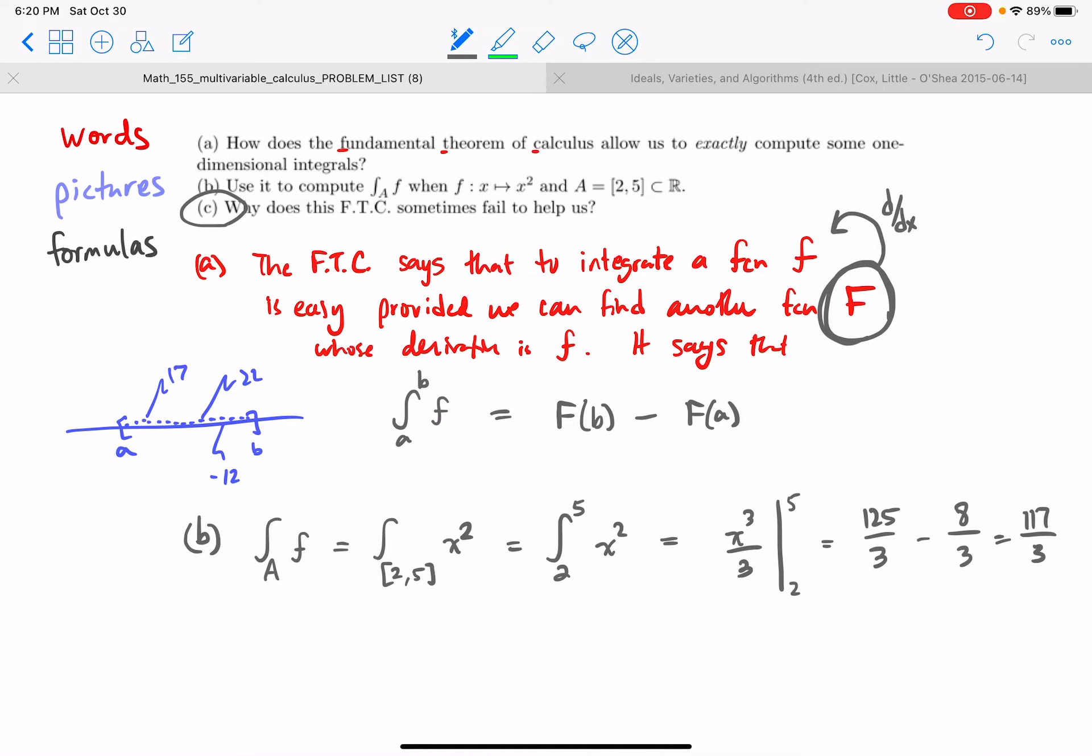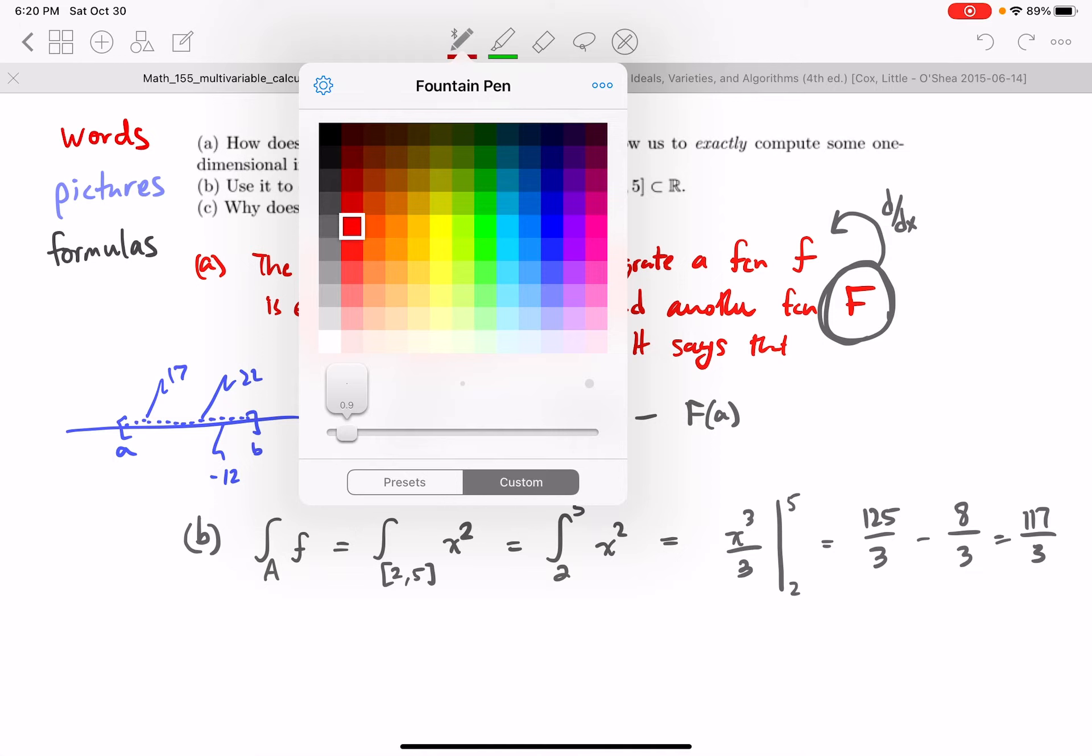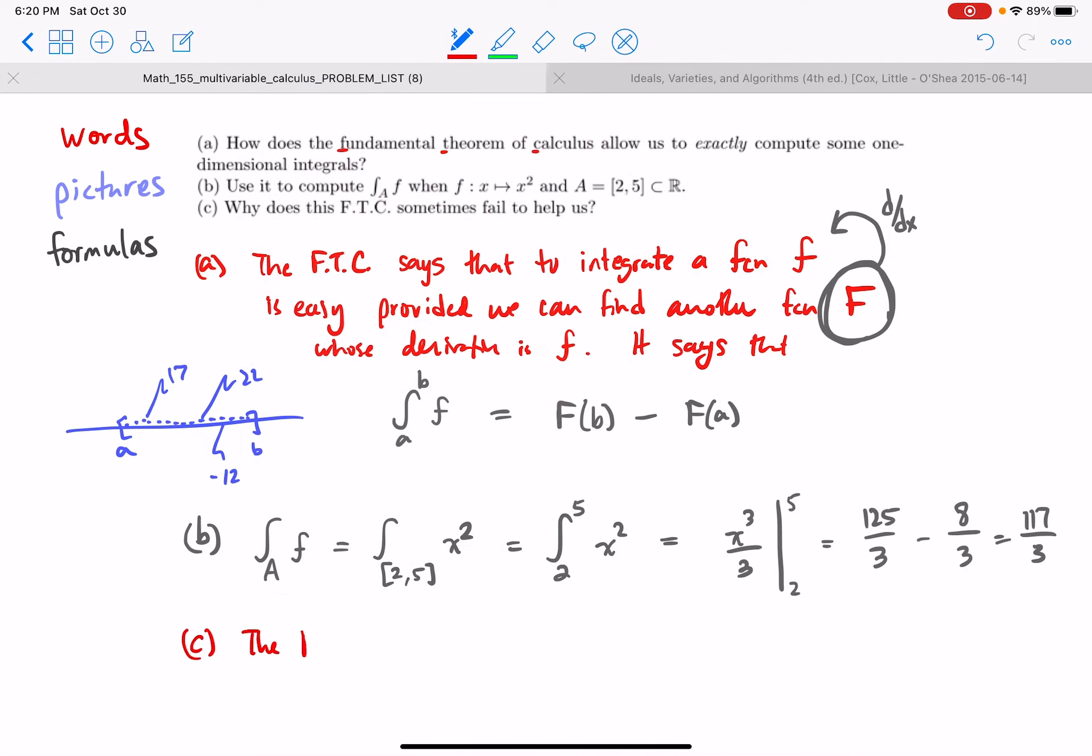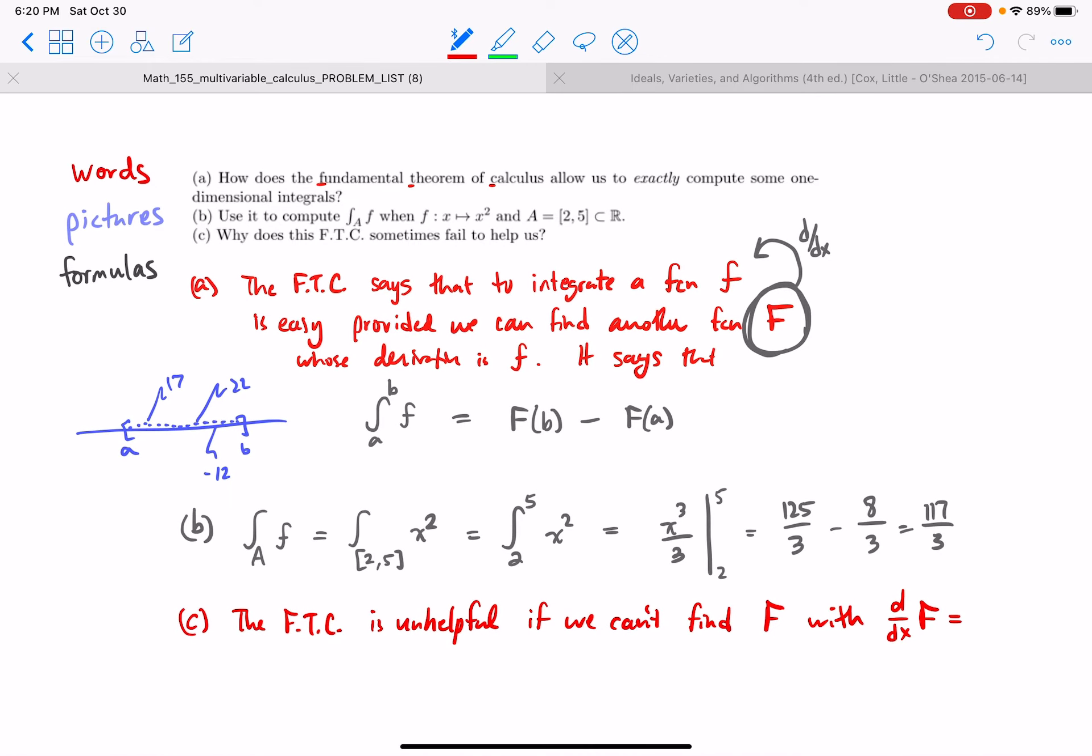Okay, why does the FTC sometimes fail us? Let's do that in words. The FTC is unhelpful if we can't find capital F with the derivative property being true. So if we can't find capital F, then we cannot plug in and subtract.